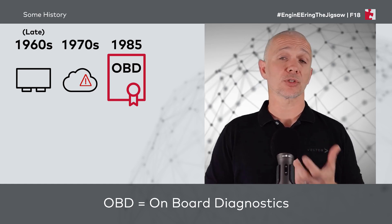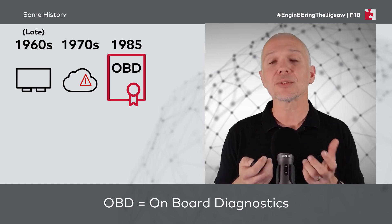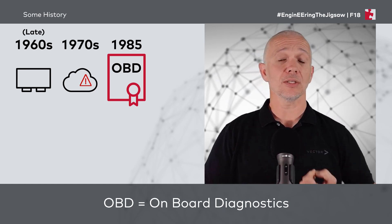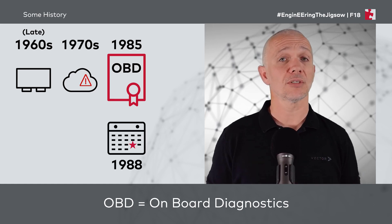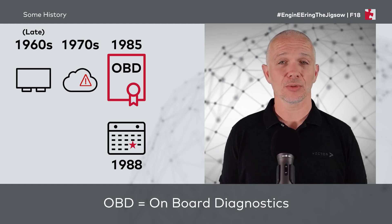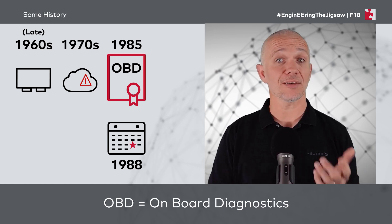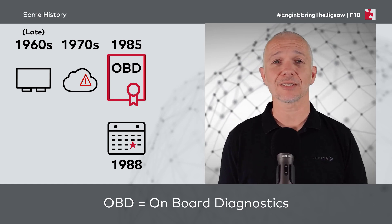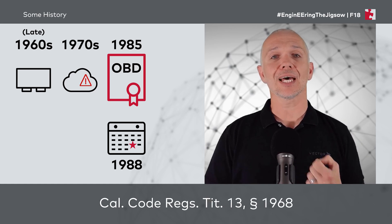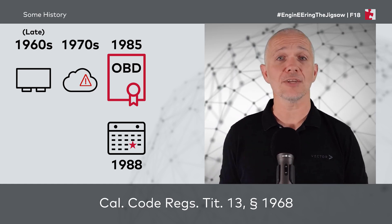So there's a concept of an emissions control system and this has to check itself to make sure it's working correctly, as an attempt to try to minimise the pollution that might otherwise come out of the vehicle. Now, this first edition of OBD — Onboard Diagnostics — had a deadline of implementation of 1988, which is now 35 years ago. And 1988 is actually a really important year for Vector — it's the year that Vector was founded. If you want to go look at these regulations, you can find the California Code of Regulations, Title 13, Section 1968, to read the original OBD regulations.